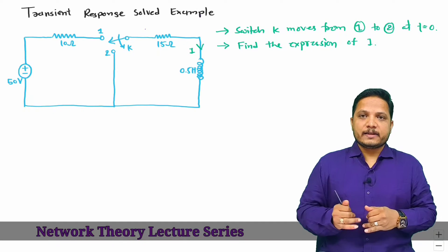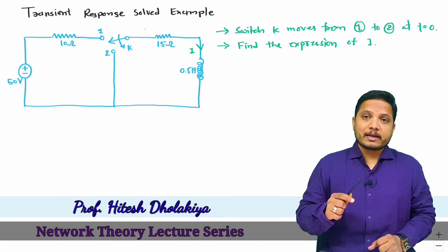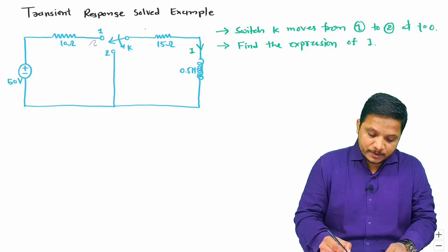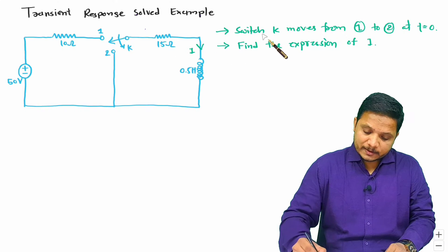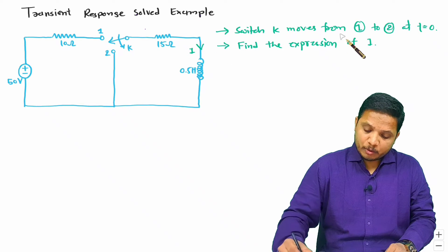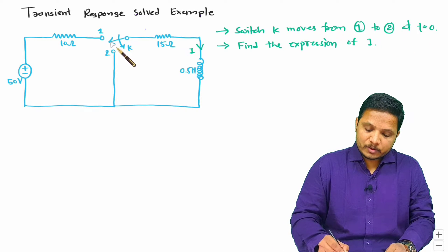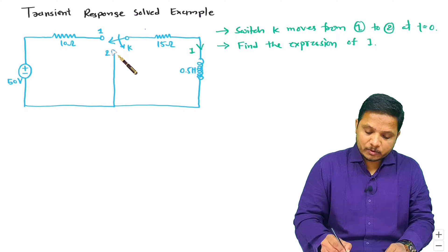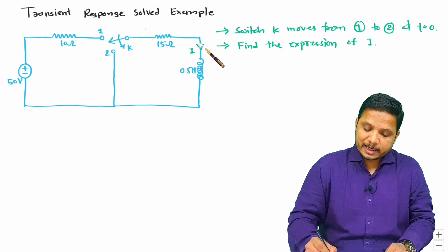Welcome to the network theory lecture series. Professor Ritesh Dulakya is going to explain one very interesting example based on transient response in this video. We have been given a circuit in which switch K moves from location 1 to location 2 at time t equals 0, and we need to find the expression of current i passing through the inductor.